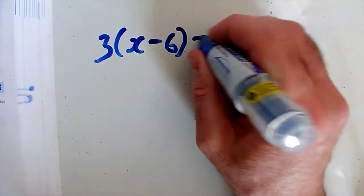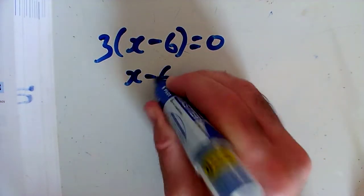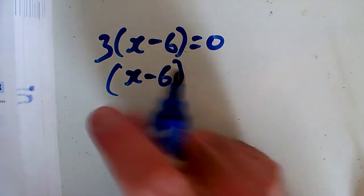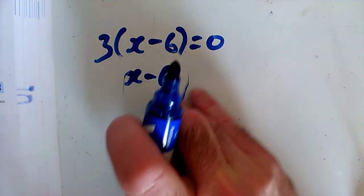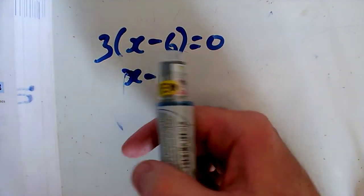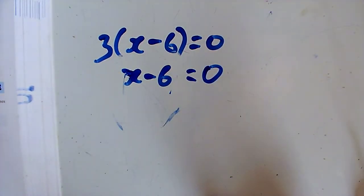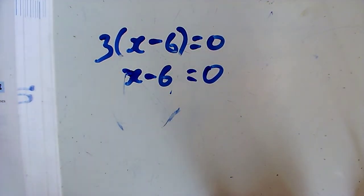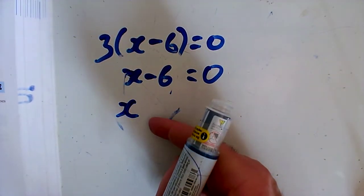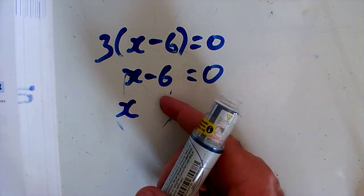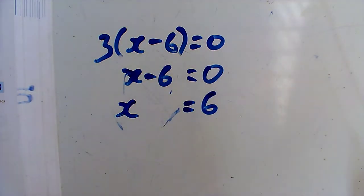Question F: 3 times bracket x minus 6 equals 0. To get x minus 6 on its own, I need to divide by 3. Zero divided by 3 is still 0. So dividing everything by 3, x minus 6 equals 0. I want x on its own, so I need to get rid of the minus 6 by adding 6 to both sides, giving x equals 6.